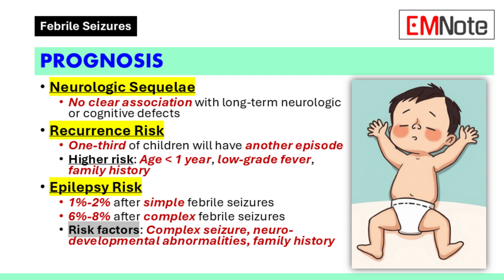Population-based studies have not shown a clear association between simple or complex febrile seizures or status epilepticus and later neurologic or cognitive defects. Approximately one-third of children with one febrile seizure will have another episode. Age at the first febrile seizure is the most important factor for recurrence; rates can be as high as 50% in patients younger than one year and around 20% in those older than three years. Other risk factors include age younger than 18 months, seizure within one hour of fever onset, seizure with a relatively low-grade fever, and a family history of febrile seizures.